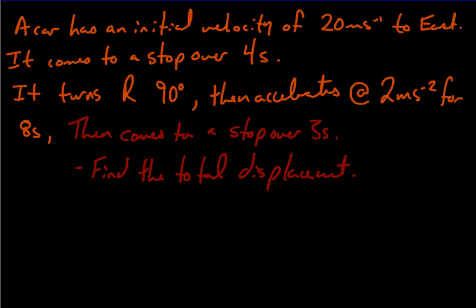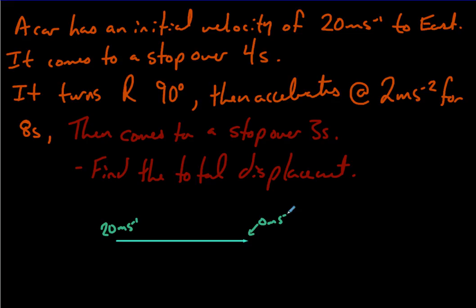The goal here is to turn this into a vector addition problem. In the first part, a vehicle is traveling to the east at 20 meters per second initially, but it's slowing down to 0 meters per second as it's traveling along. So at the beginning it's covering lots of distance in each interval of time, and then slowly coming to a stop.